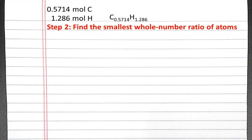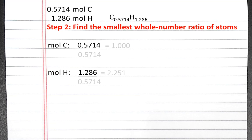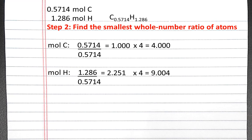The next step is to find the smallest whole number ratio of atoms for carbon and hydrogen. We divide both values by the smallest number of moles, which is the moles of carbon — 0.5714. This gives us numbers of 1 or greater for all elements. We then eliminate decimals by multiplying by a factor — to eliminate 0.25 from hydrogen, we multiply all numbers by 4. So carbon is 4 and hydrogen is 9, giving us an empirical formula of C4H9.